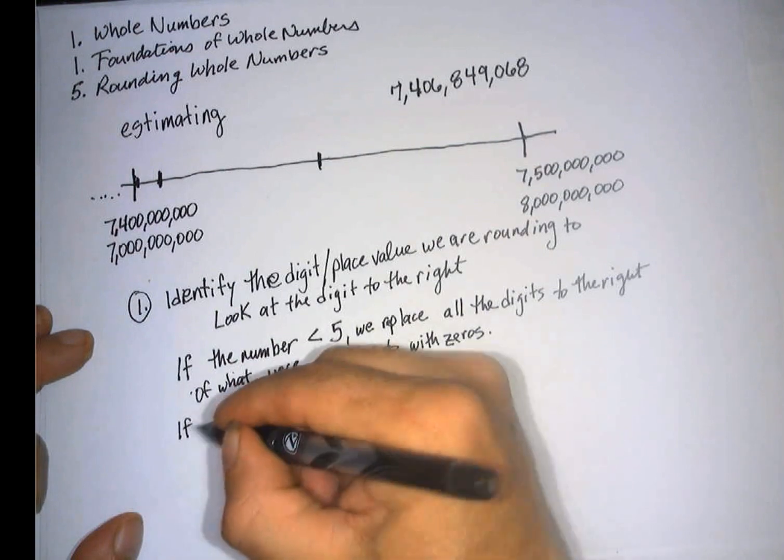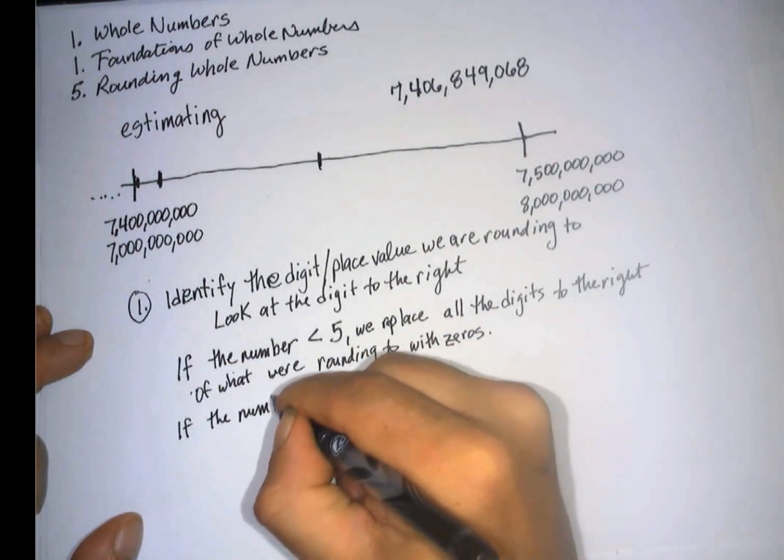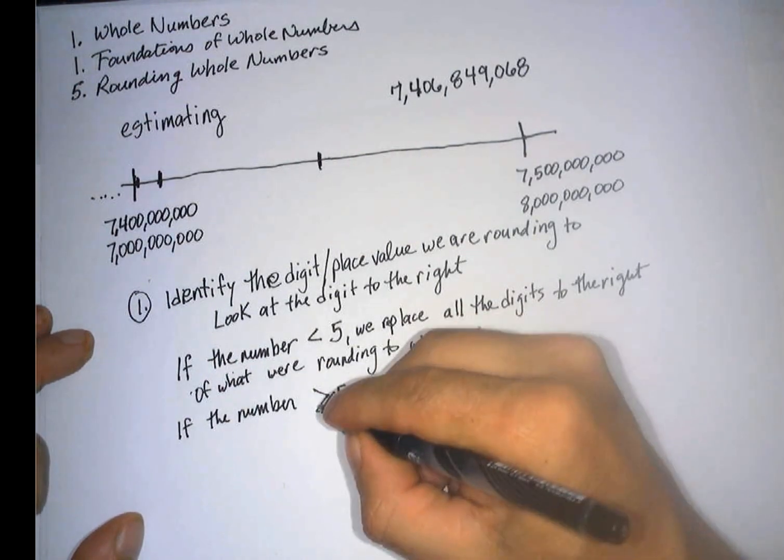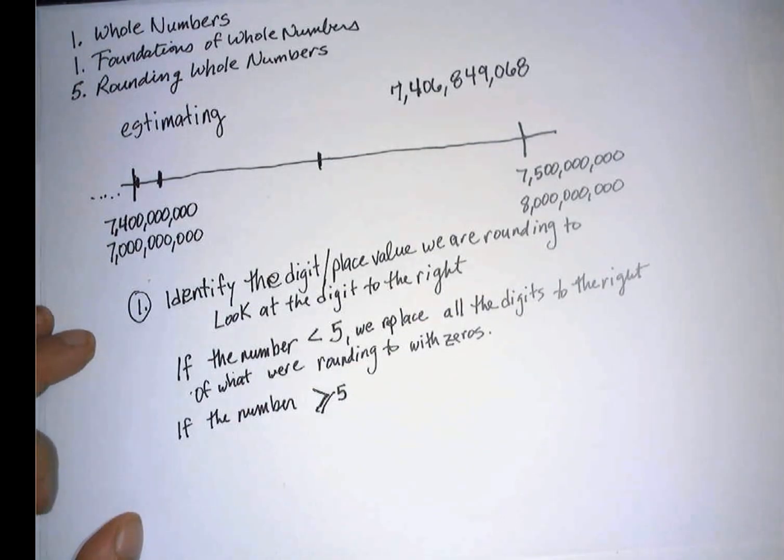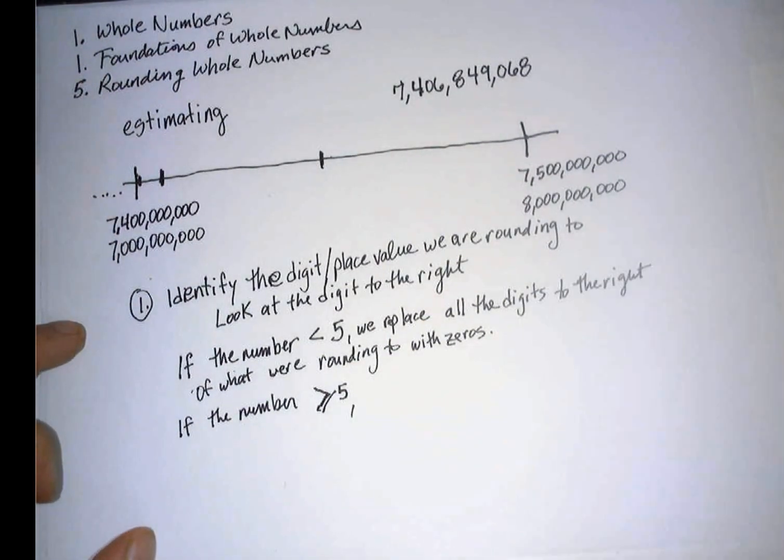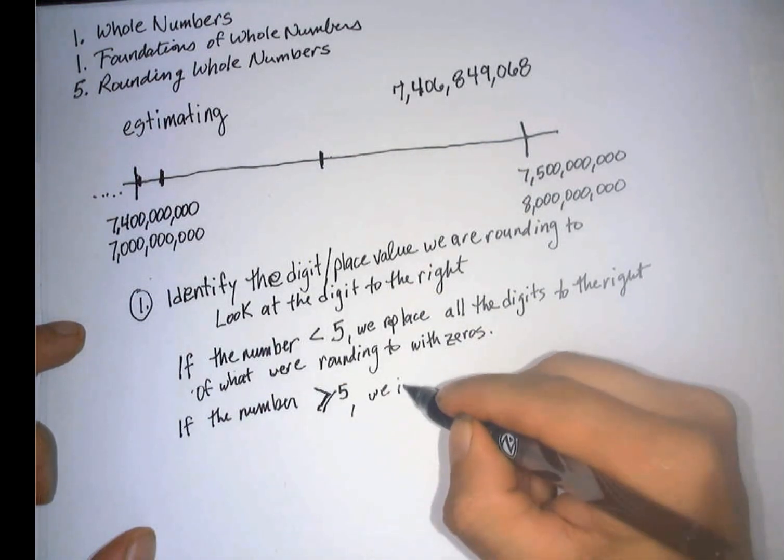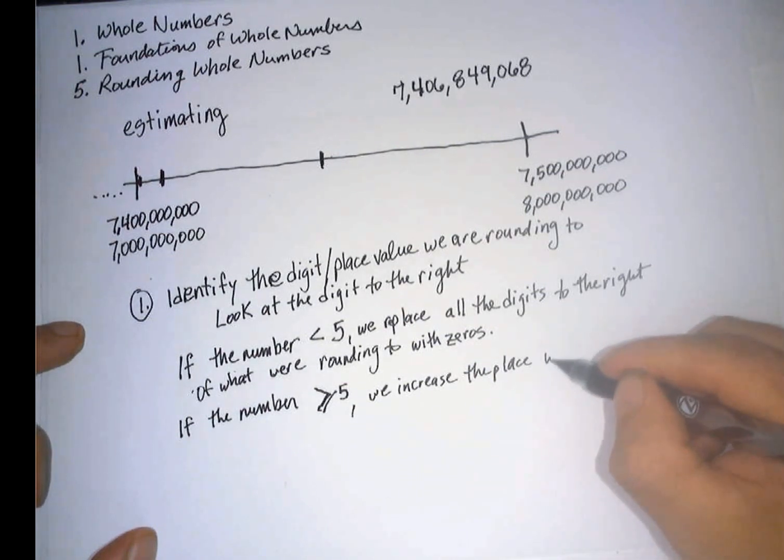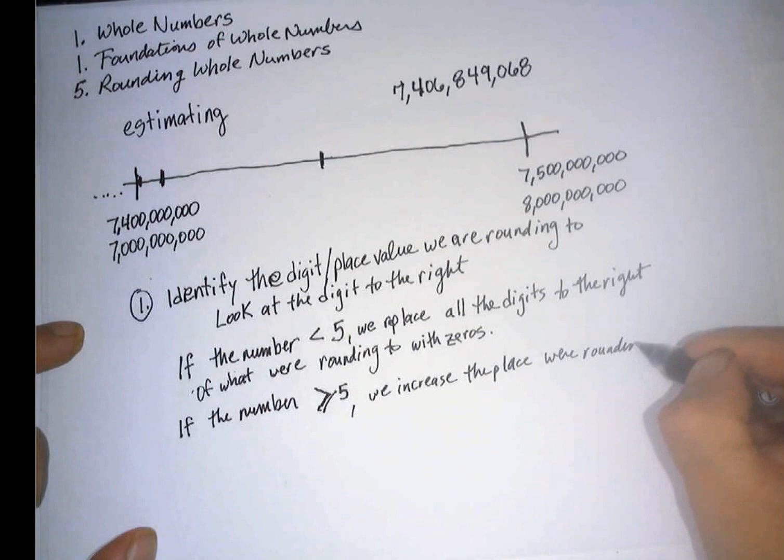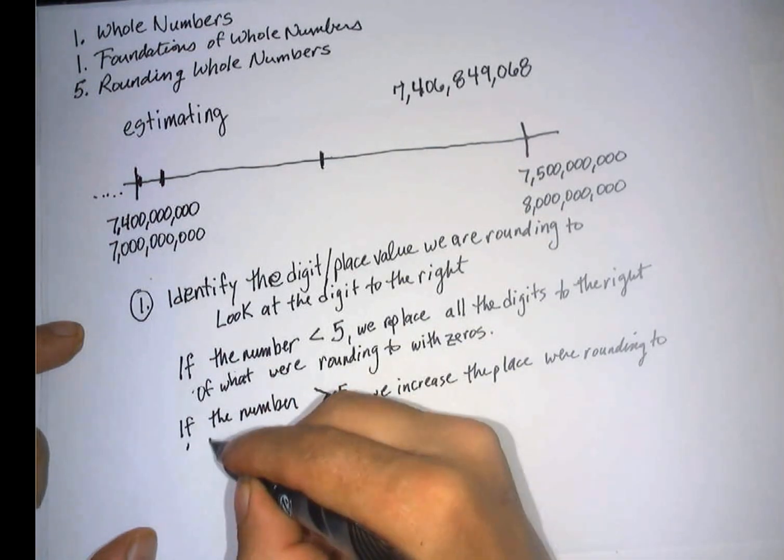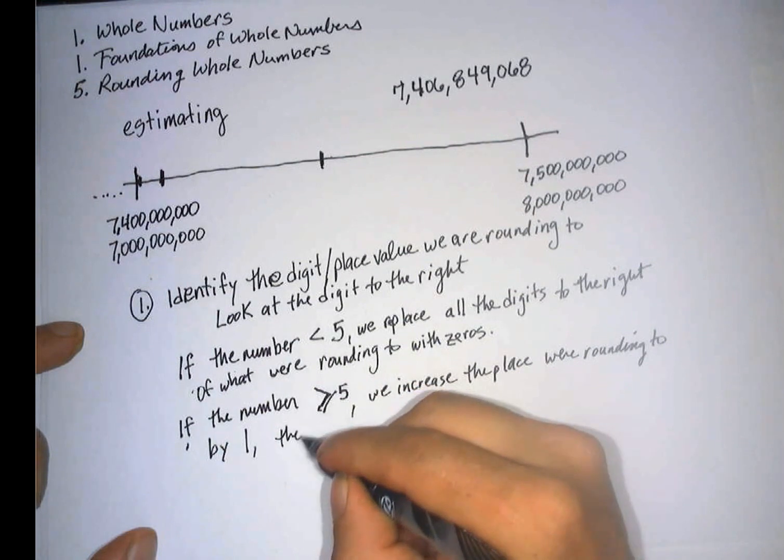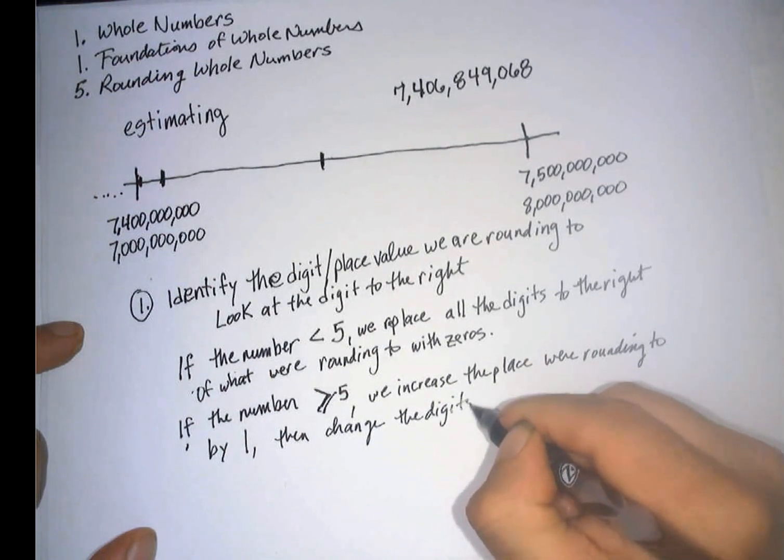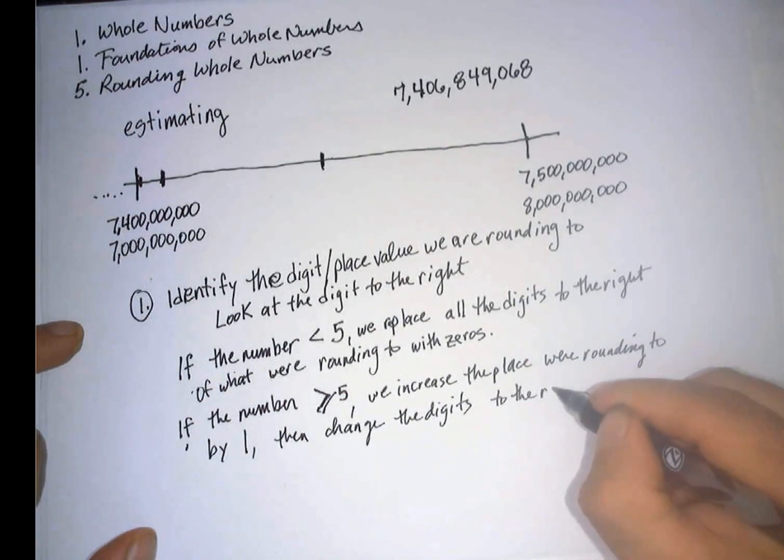Now, if the number is greater than 5 or equal to 5, which we haven't really talked about, if it's greater than or equal to 5, we increase the place we're rounding to by 1. Then change the digits to the right to zero.